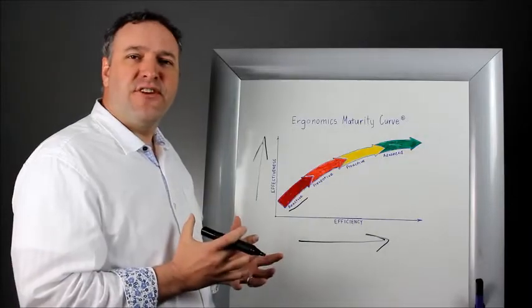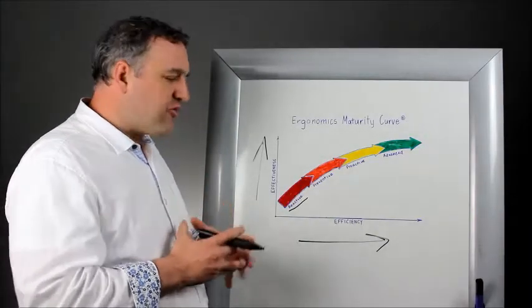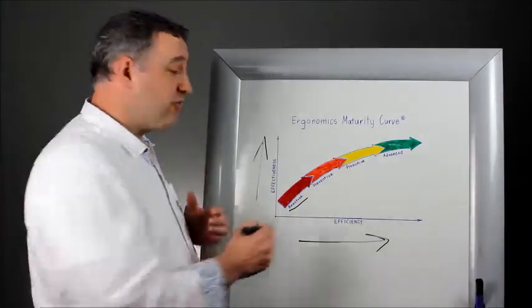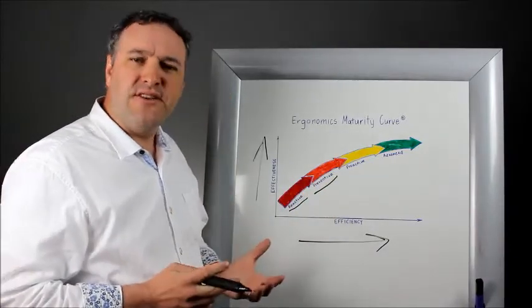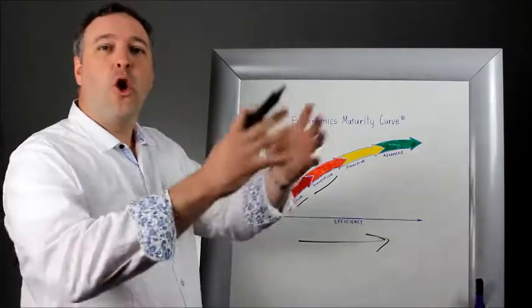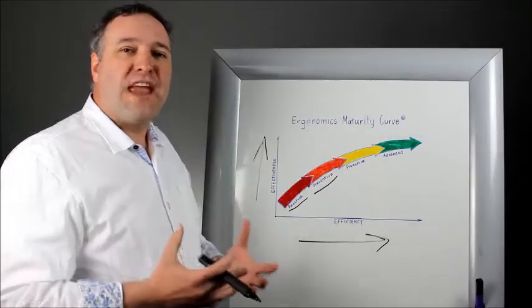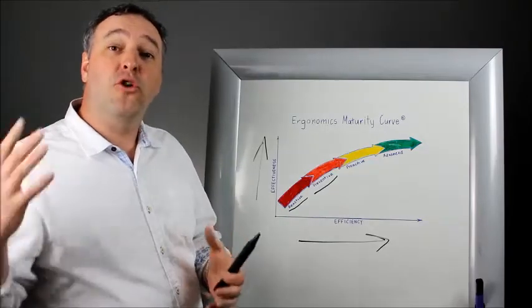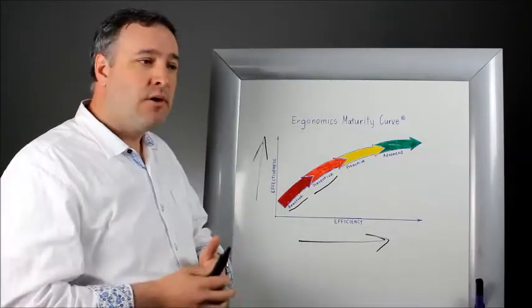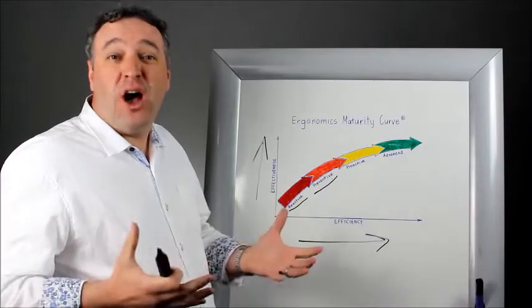People realize it's not efficient, it's not effective, so they start to go on and look for other approaches, and that's when they start to do preventive activities. Preventive activities are things like job matching, where I take a look at the work environment, I understand the physical requirements of that work environment, and then I find employees and workers who can do it. It's making people fit the job, basically.